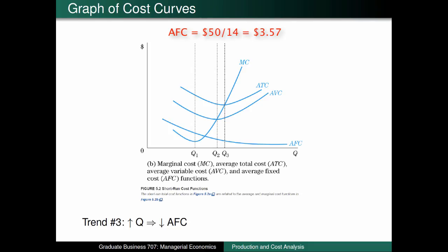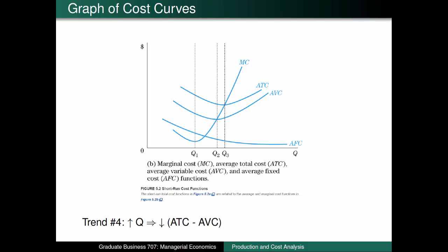For example, producing only 14 pizzas would lead to an average fixed cost of $50 divided by 14, which is equal to $3.57. Producing 35 pizzas reduces average fixed cost to $50 divided by 35, which is $1.43. Indeed, producing 217 pizzas would continue to reduce average fixed cost to merely 23 cents, which is $50 divided by 217. Finally, notice that the gap between average total cost and average variable cost becomes narrower as quantity increases. This is because average total cost equals average fixed cost plus average variable cost. Since average fixed cost necessarily decreases with increased quantity, average variable cost converges towards the value of average total cost.